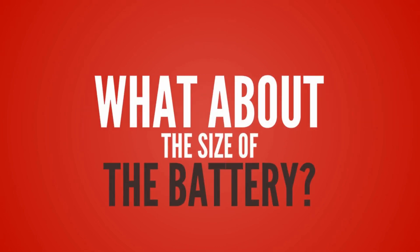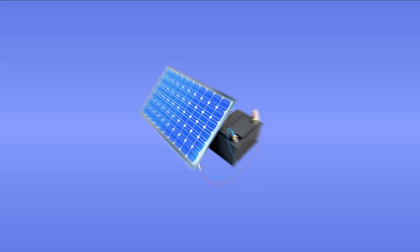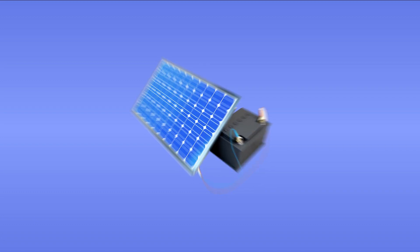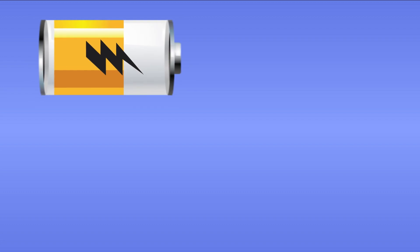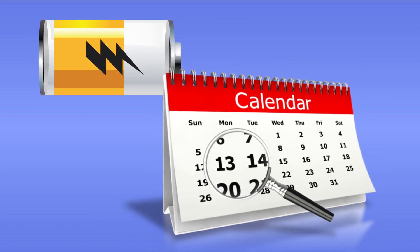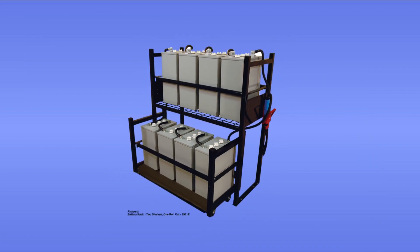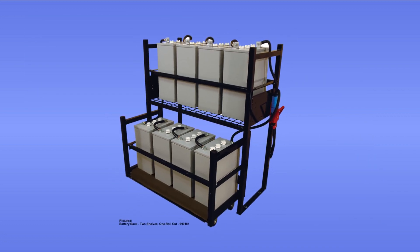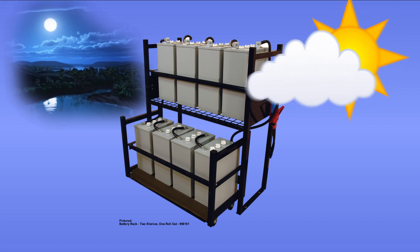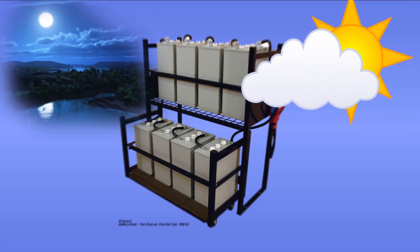What about the size of the battery? A deep cycle battery is recommended to be used in PV systems. It is specifically designed to be discharged to low energy levels and rapidly recharged, or cycle charged and discharged, day after day for years. Make sure that the battery is large enough to store enough energy to operate the appliances even at night and on cloudy days.